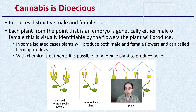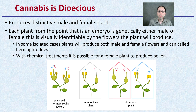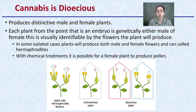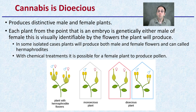Now, cannabis is dioecious — meaning it produces distinctive male and distinctive female plants. Each plant, from the point that it is an embryo, is genetically either male or female, visually identified by the flowers it will produce. In some isolated cases, plants will produce both male and female flowers — these are called hermaphrodites. With chemical treatments, it is possible for a female plant to produce pollen and a male plant to produce female flowers, but generally we're talking about distinctively male or female plants.